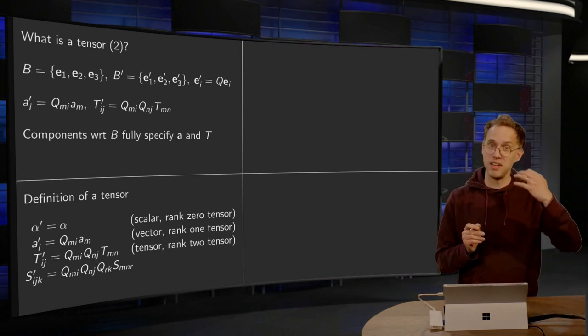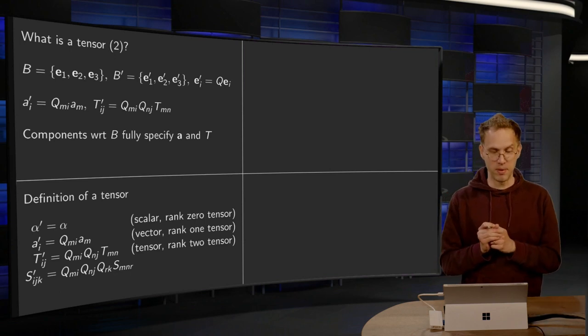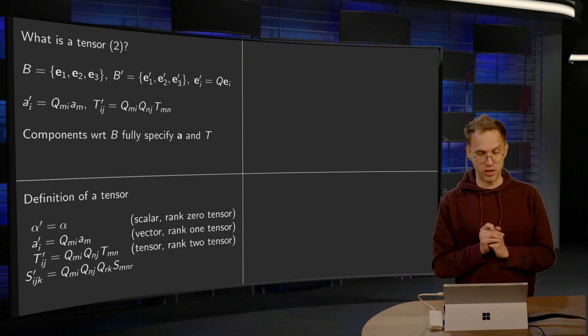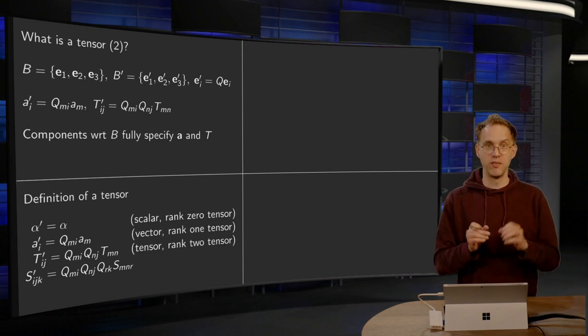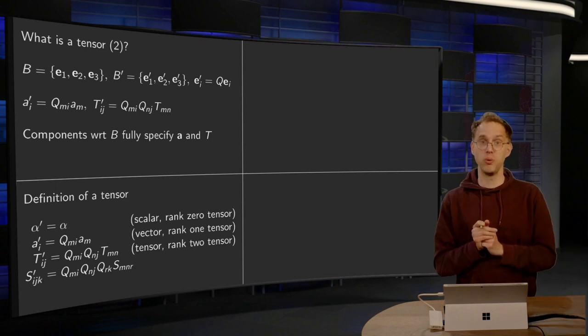We have seen that if we transform a vector, we have seen ai' equals Qmi am. So we call a vector a first order tensor, a rank one tensor. We need one Qmi to transform its component to a new basis.